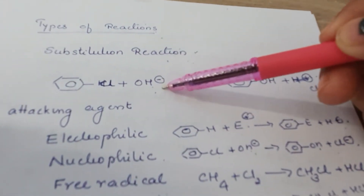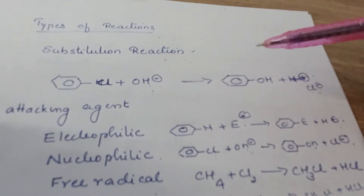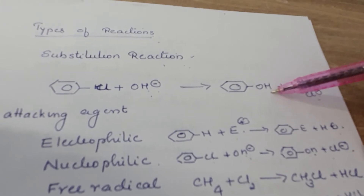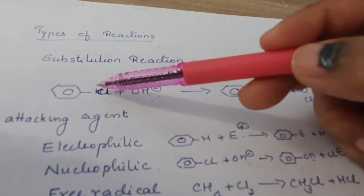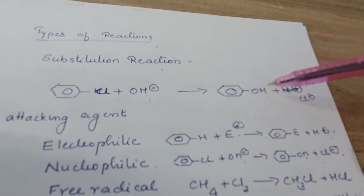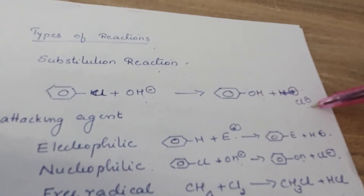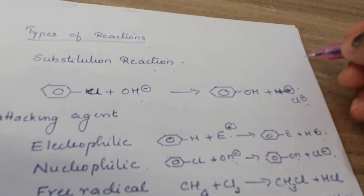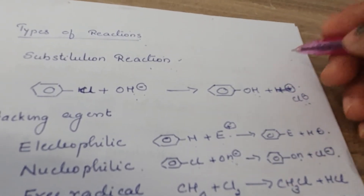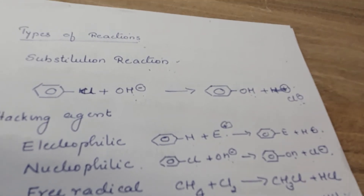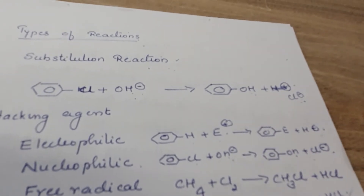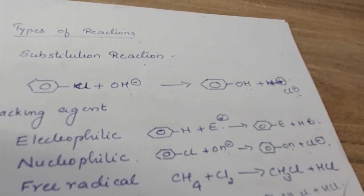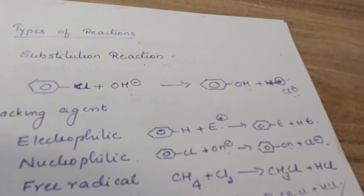For example, take the case of chlorobenzene reacting with OH minus. The Cl will be substituted by OH minus. So in that process, the chlorine position is attacked by OH and chlorine comes out. That process is known as substitution.